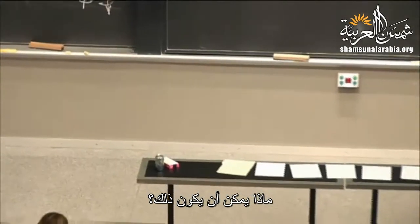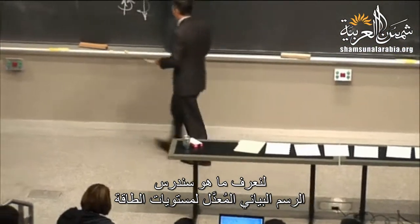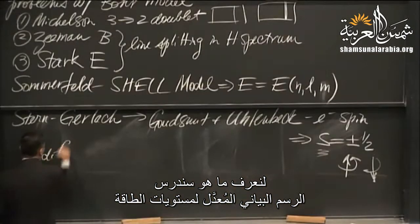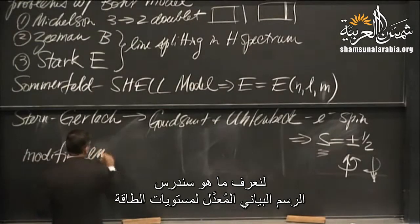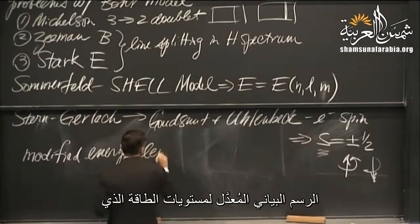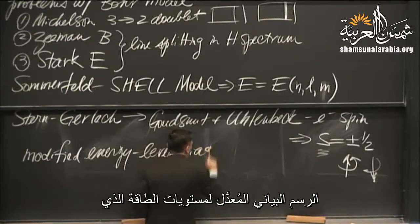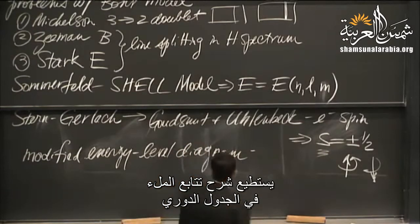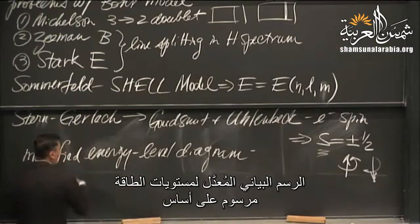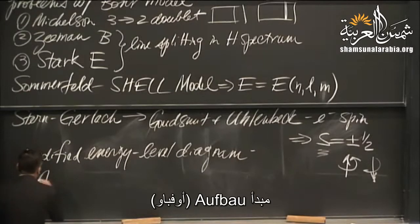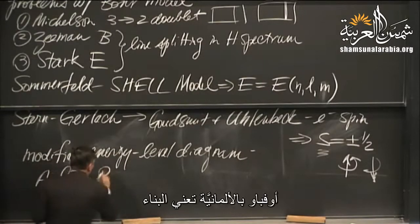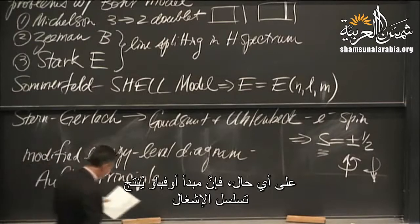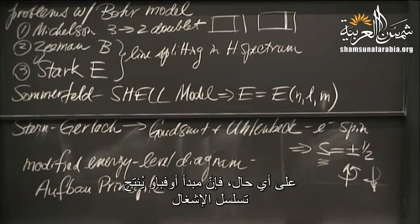We need a modified energy level diagram that can explain the filling sequence in the periodic table. That modified energy level diagram is drawn on the basis of the Aufbau Principle — Aufbau being a German word meaning construction — and it generates the filling sequence.